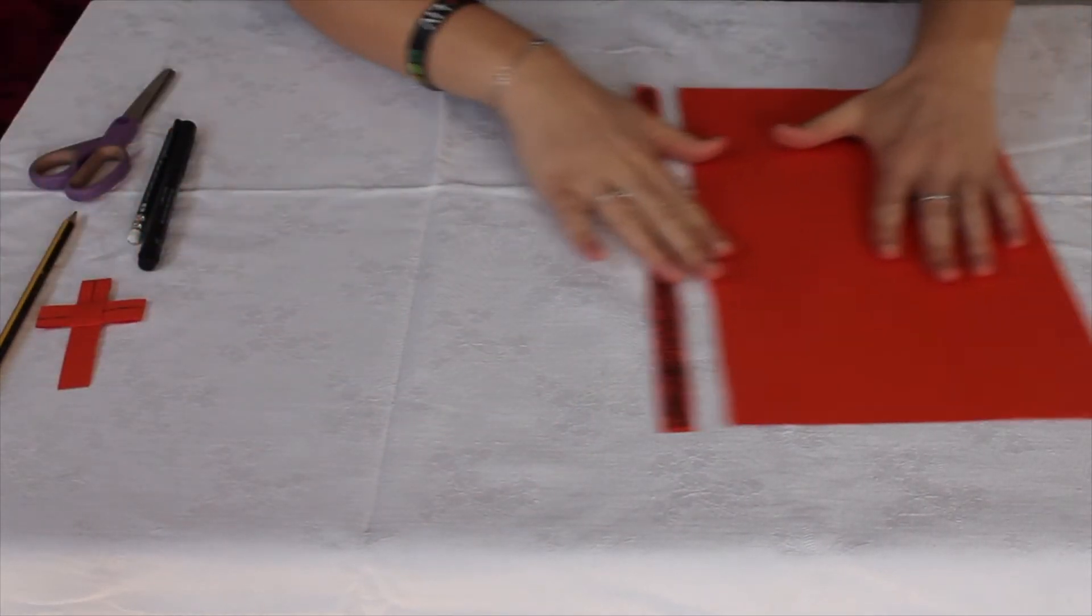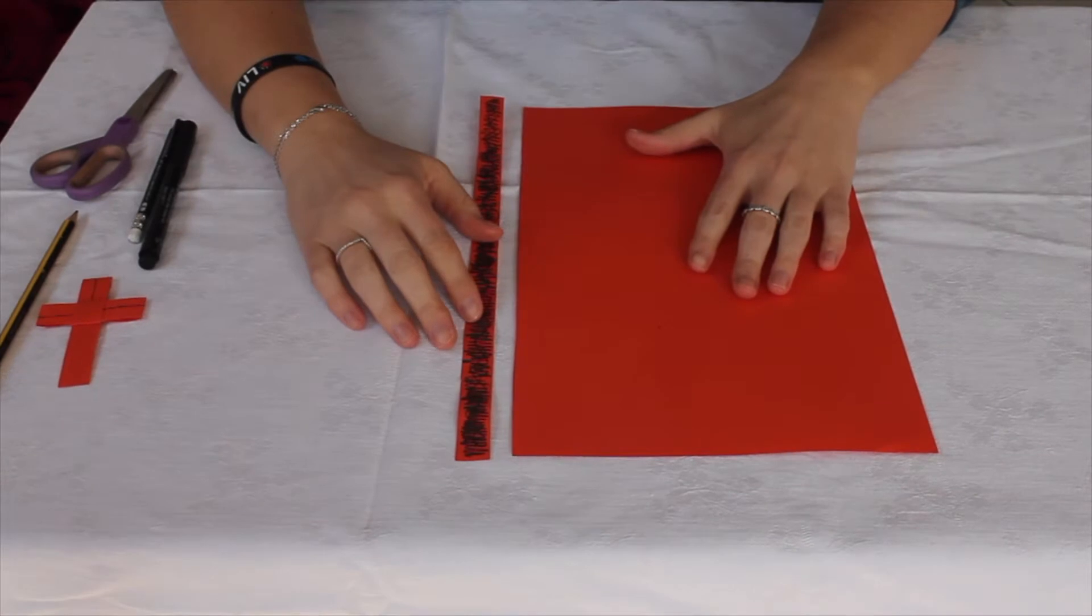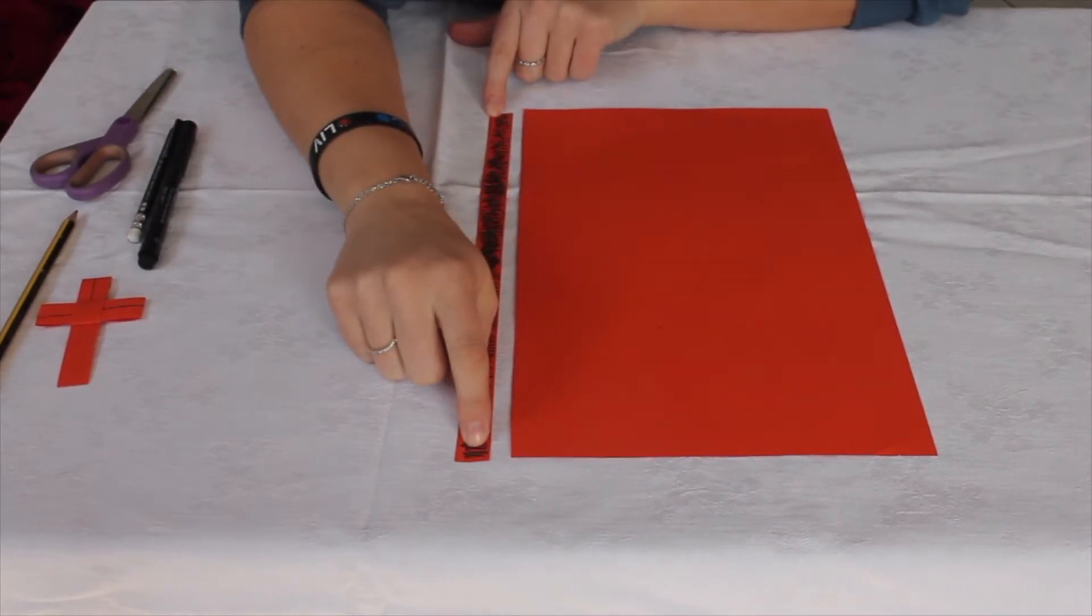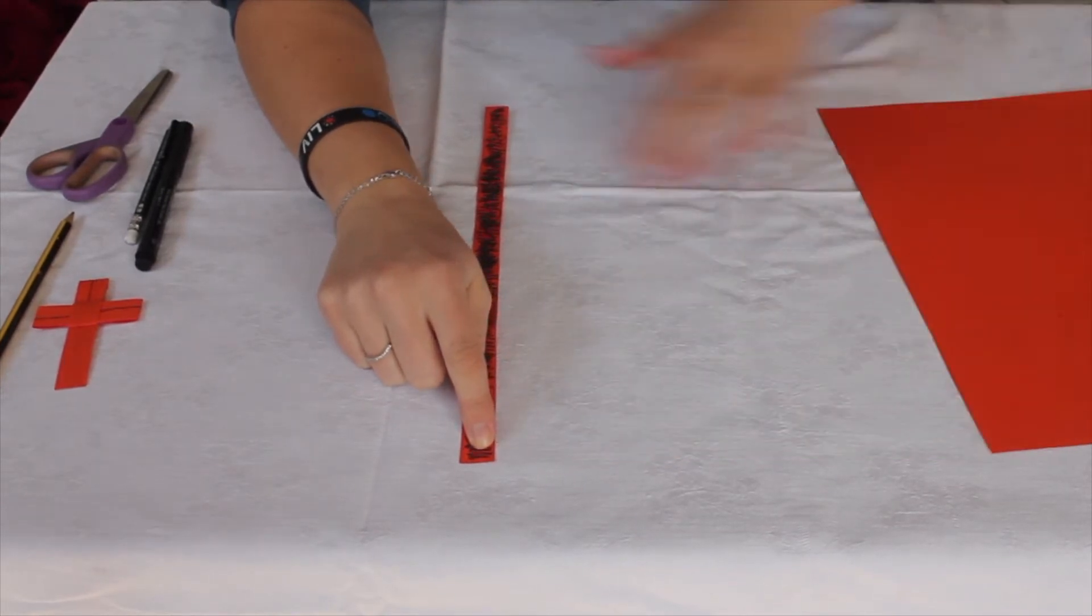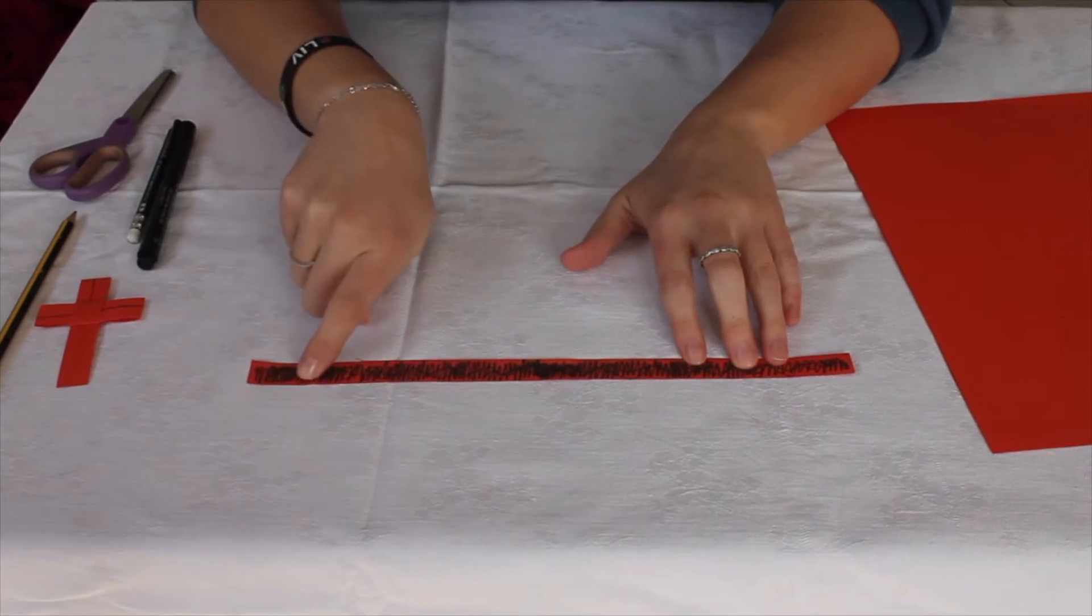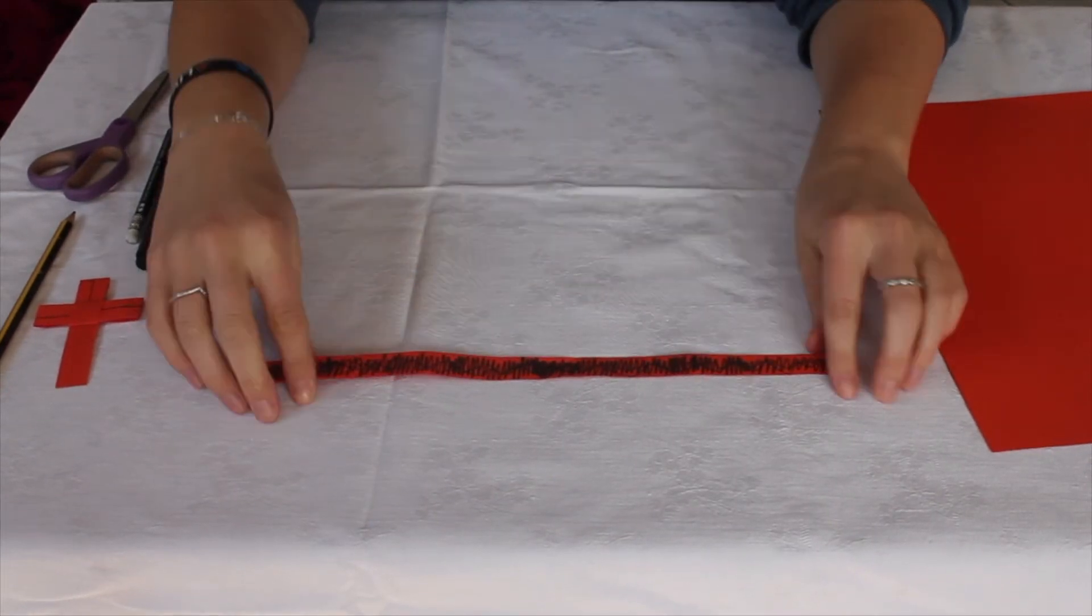So first of all you take a piece of A4 paper and just cut off about a centimeter and a half off the edge and we're going to use a strip. I've coloured in this side just to make it a little bit easier for you to see what I'm doing.